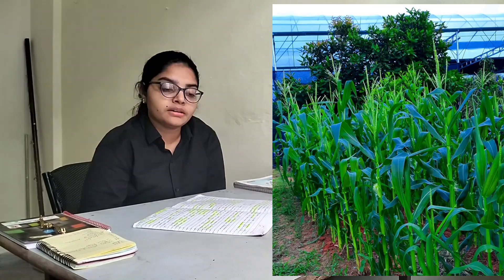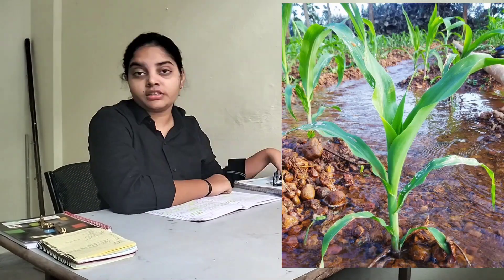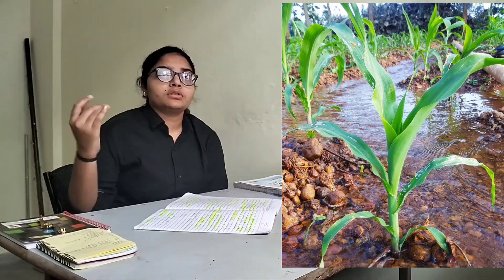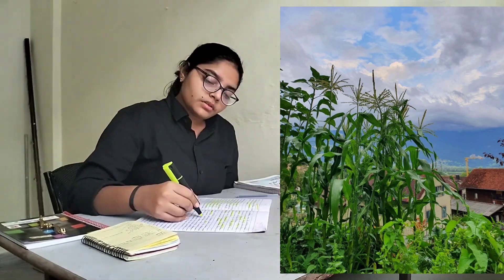First we start with brown strip downy mildew of maize. This is the most destructive disease, and it is mainly found in Rajasthan and all maize-growing states of India. The causal organism is Sclerophthora rayssiae.